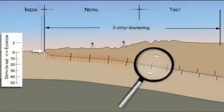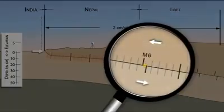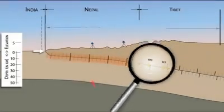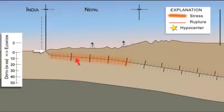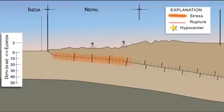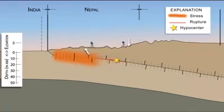In the 15 to 20 kilometer depth range, frequent magnitude 3 to 6 earthquakes occur on the megathrust plate boundary. The shallow part of the fault is locked by high friction, and stress increases during motion on the fault at deeper levels. During the Gorkha earthquake, that stress overcame friction, and the overriding Eurasian crustal block lurched southward.